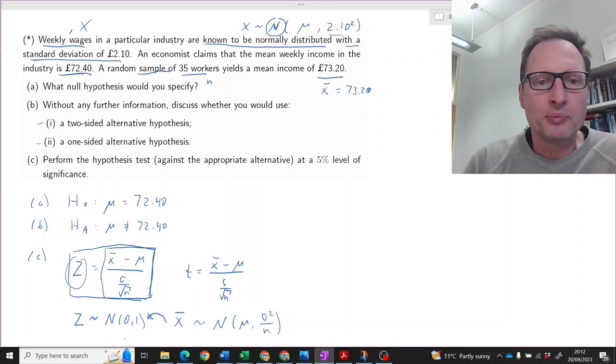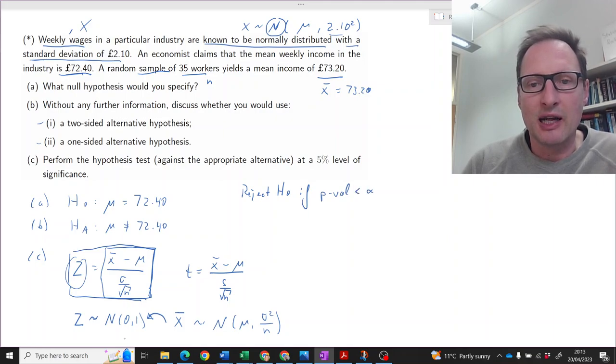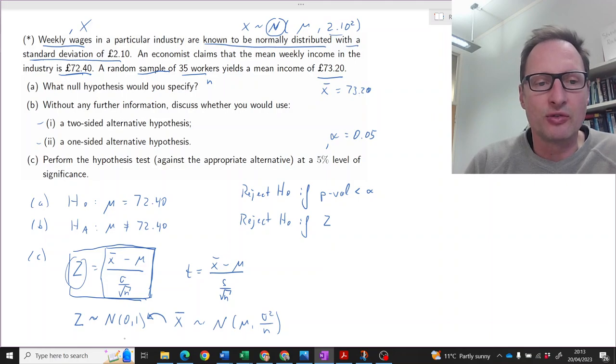Now let's perform the hypothesis test. Let's actually write down a decision rule. We know there are a number of ways how we can write down decision rules. One would be: we reject H-naught if the p-value is smaller than alpha, and our alpha here is 5%, so alpha is 0.05. Or we could use a different decision rule: reject H-naught if z exceeds critical values. We need to find critical values—for what values of z would we reject? We'll complete this in a moment.